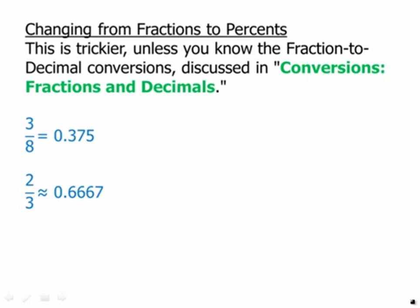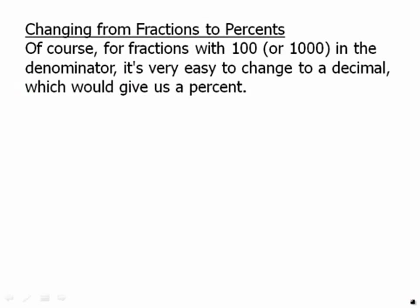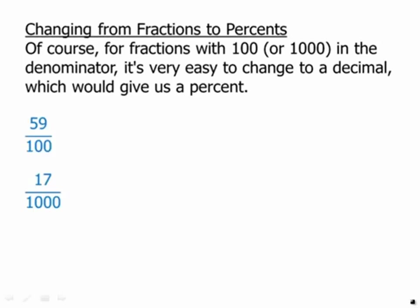Once we have them in decimal form, we just slide the decimal place two places over to get a percent. For fractions with one hundred or one thousand in the denominator, it's very easy to change to a decimal, which gives us a percent. For example, fifty-nine over one hundred obviously just becomes fifty-nine percent. Seventeen over a thousand becomes 0.017, and we can write that as 1.7 percent.